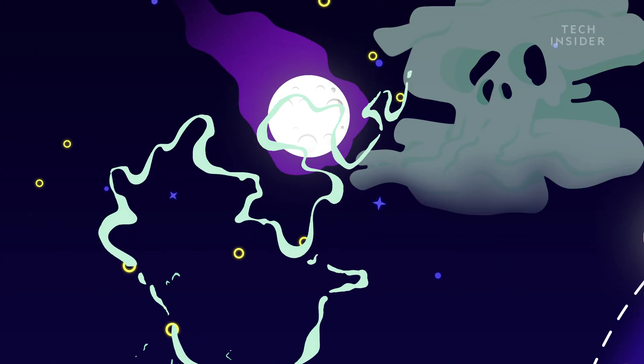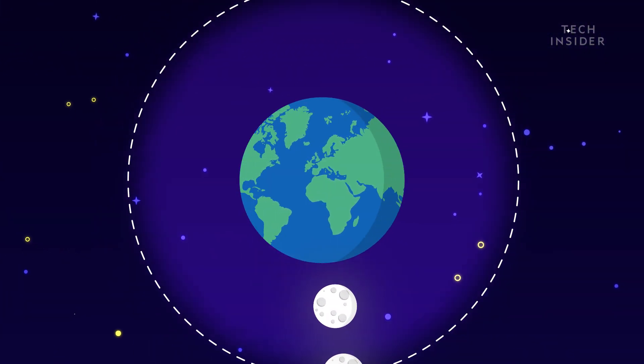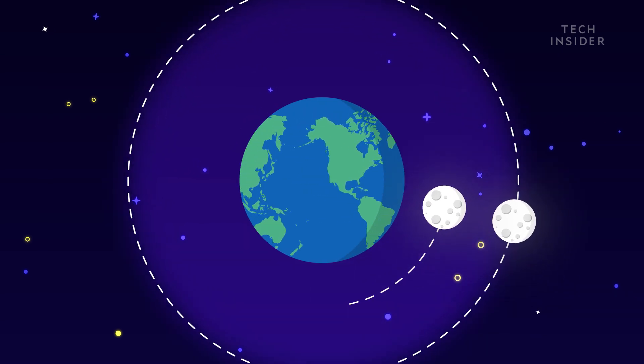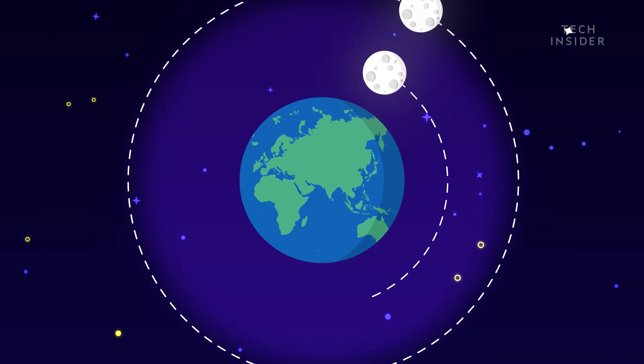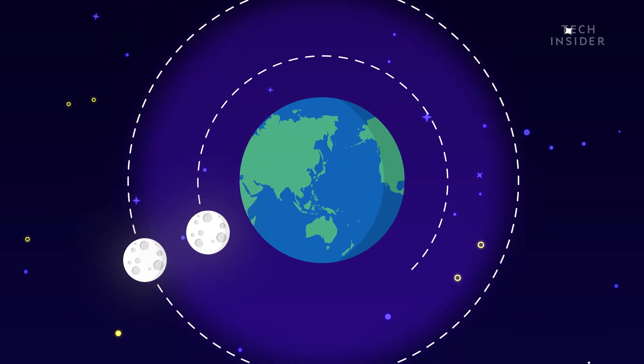It wouldn't be pretty. Imagine the moon's identical twin comes hurtling by and is trapped by Earth's gravity. As it settles into orbit, halfway between Earth and our original moon, it yanks violently at the oceans.